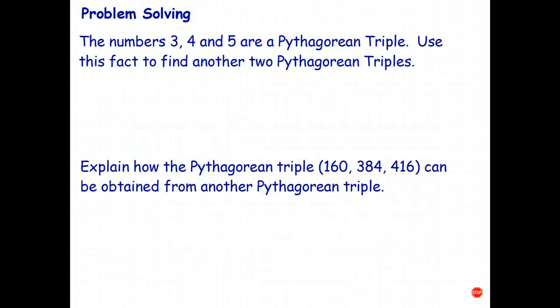Okay, here's a few problems for you to solve. So once again, have a read of the problems. Stop the video. And once you've had a go, turn it back on again, and we'll check your answers. These aren't very hard, by the way. The numbers 3, 4, and 5 are a Pythagorean triple. Use this fact to find another two Pythagorean triples.